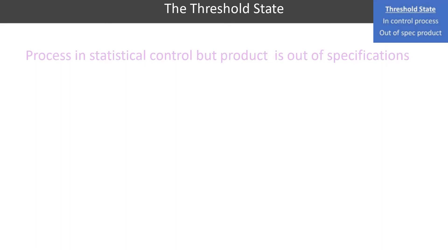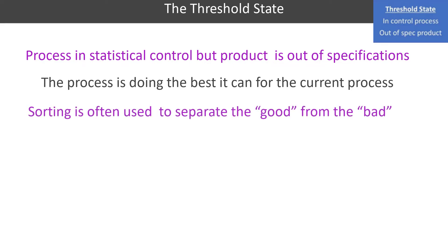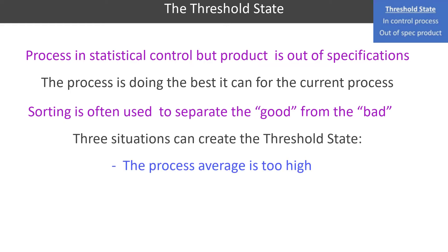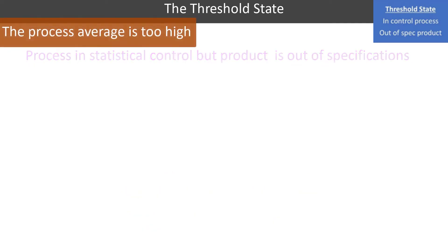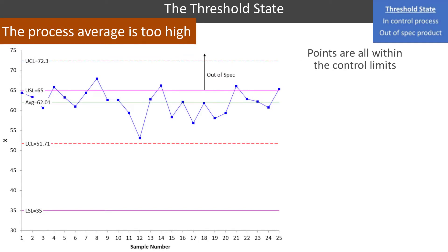Now we're going to move to the threshold state, where our process is still in control but now we have out-of-spec product. Since the process is in control, it's doing the best it can — the only thing you can do is sort things to separate the good from the bad. Three situations can create the threshold state: the process average is too high, the process average is too low, or the natural tolerance is actually greater than the engineering tolerance. Let's start with one where the process average is too high.